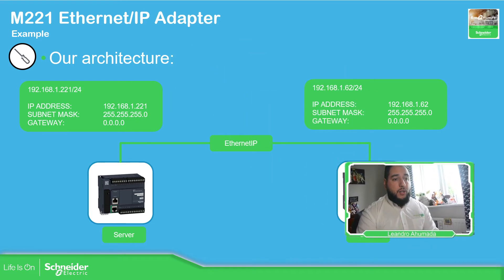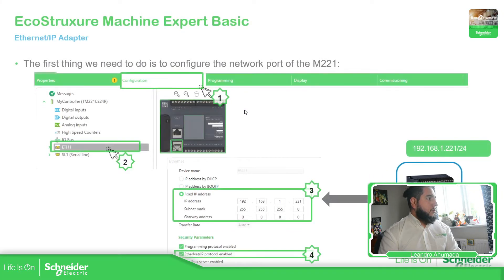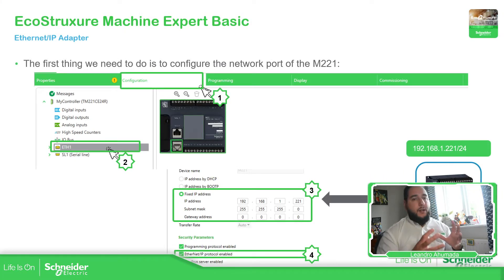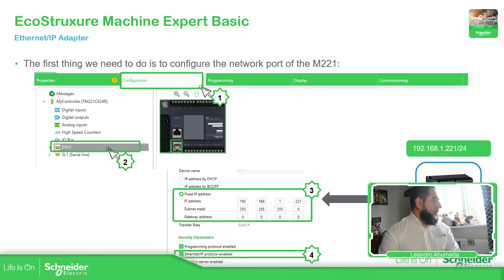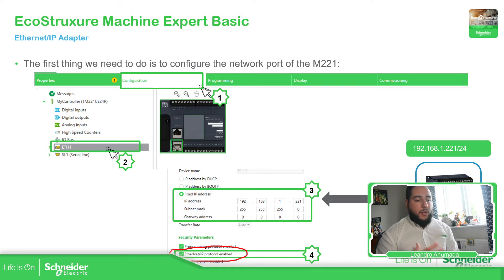Here you can see some of the configurations that they have. Once we are in the configuration of the controller in the Ethernet port, we just need to define that this is important — Ethernet protocol enabled. This must be enabled, otherwise we cannot communicate with the other device. Once we use this Ethernet adapter configuration for the Ethernet port of the M221, we are able to share the information to other devices.